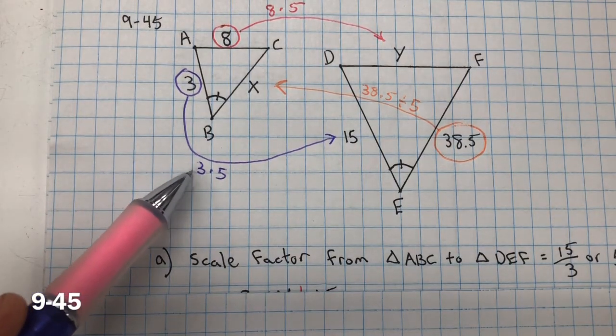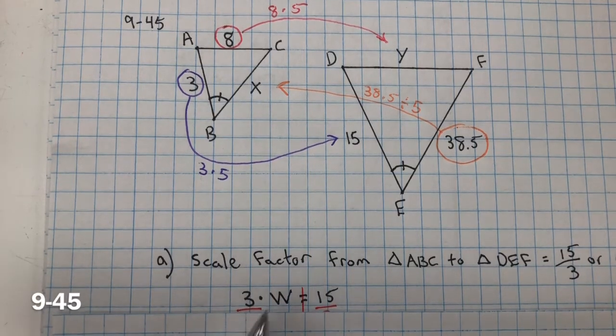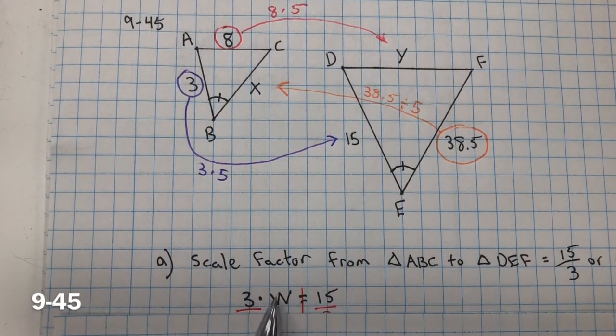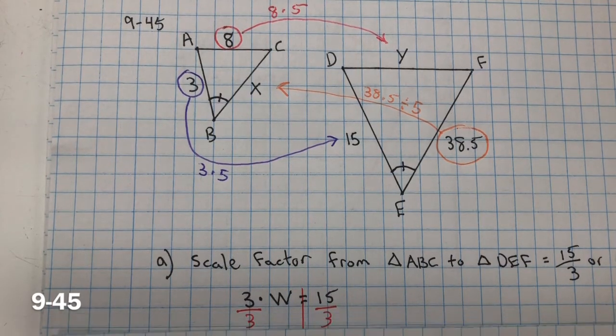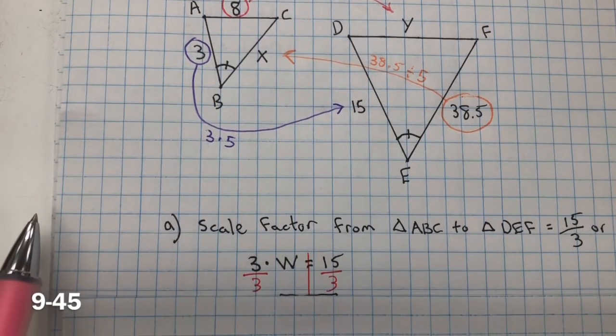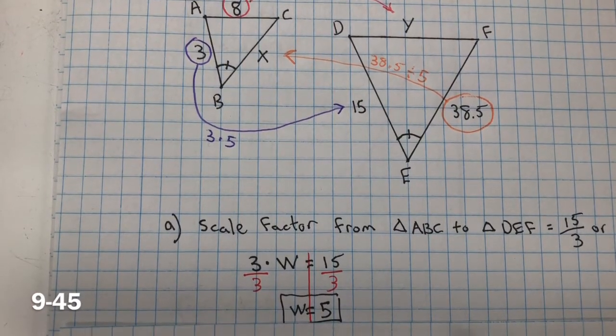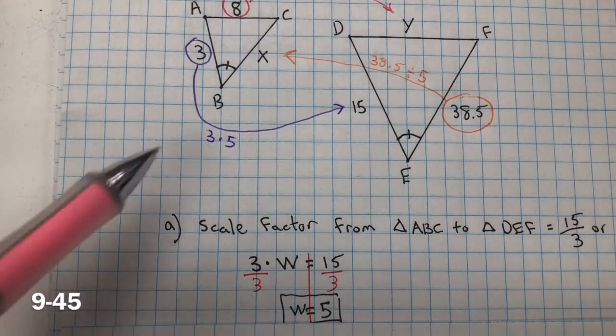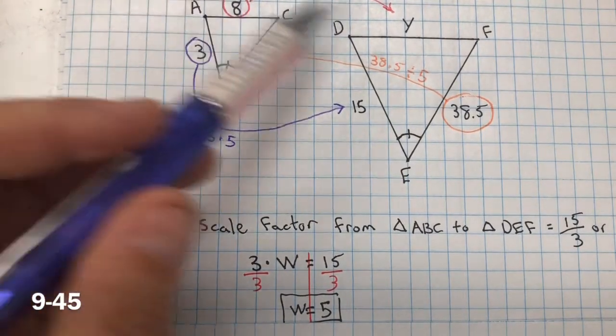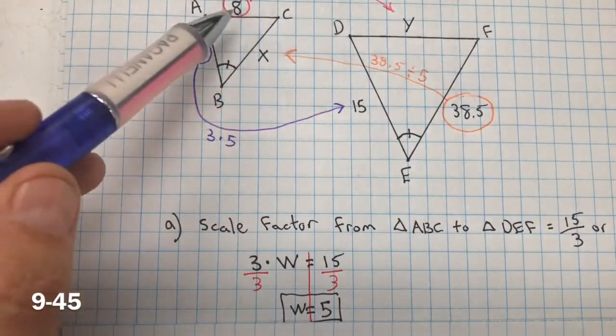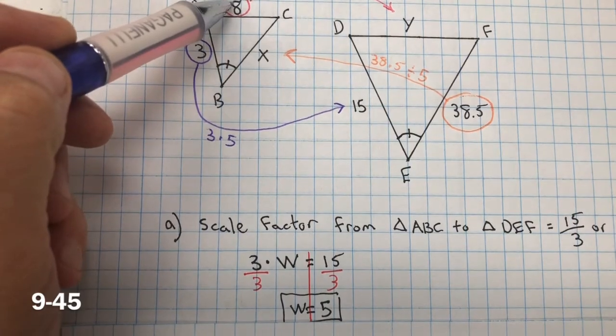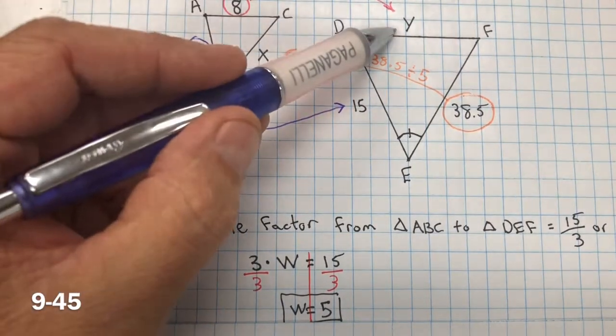Well, if we have 3 and we're multiplying it by a number to get 15, that number we're trying to find out what it is. So we divide both sides by 3, and this is a big one. 15 divided by 3, and we get W equals 5. So we know we have the scale factor of 5, or 15 thirds. So from 3, we multiply it by 5 to get 15. And we can also get Y the same way, because the scale factor, they're similar triangles, so their corresponding sides will have the same scale factor. So 8 multiplied by 5 would give us 40. So Y equals 40.